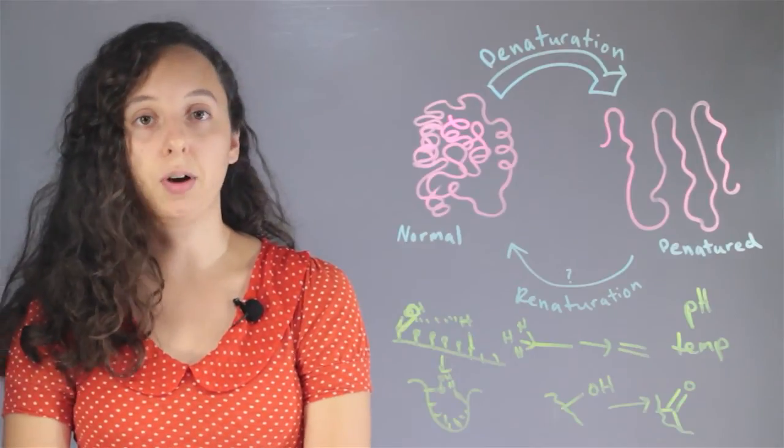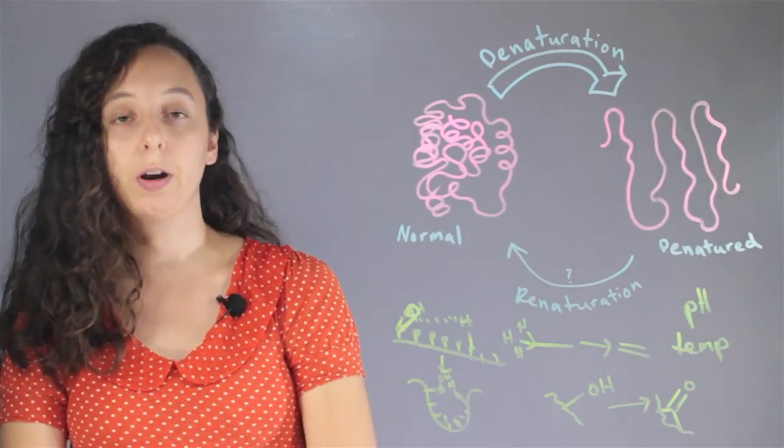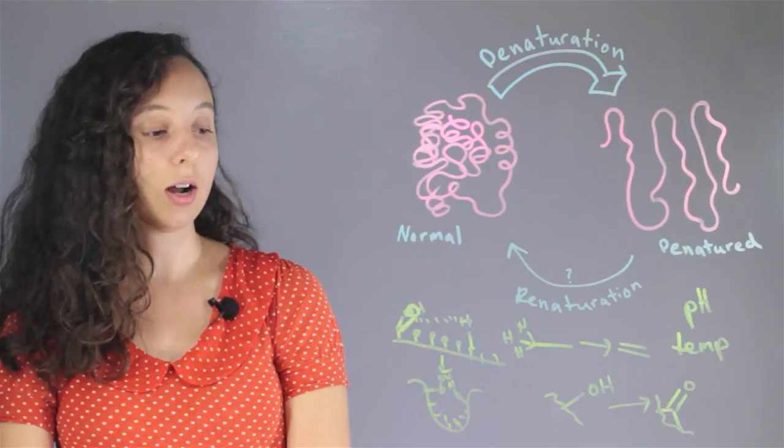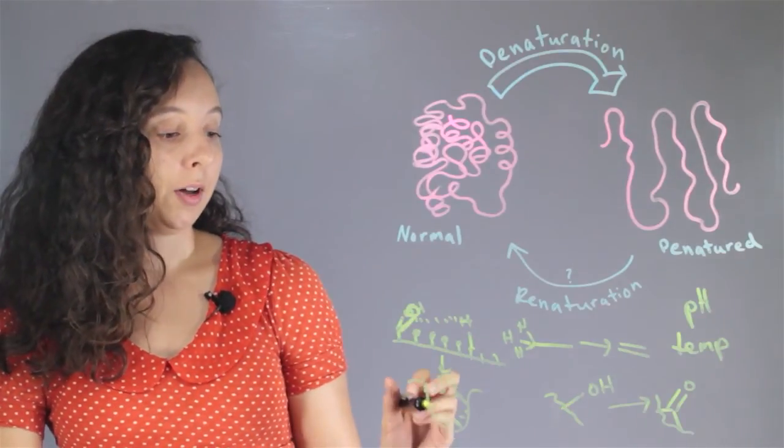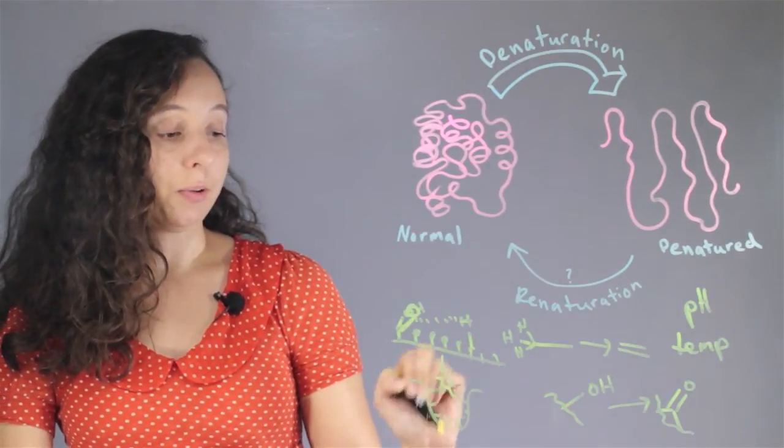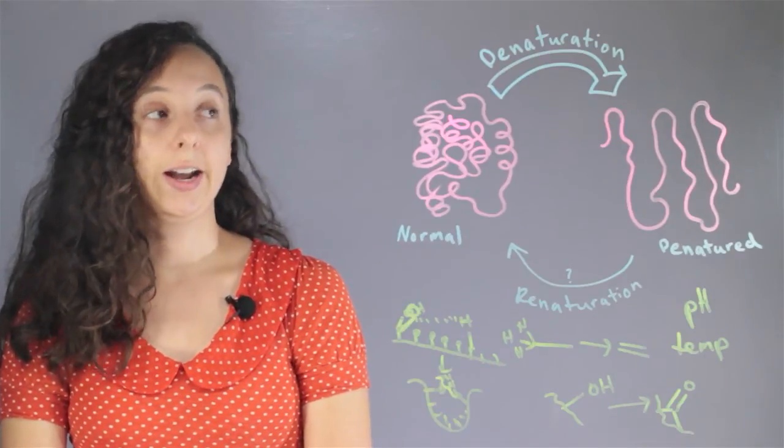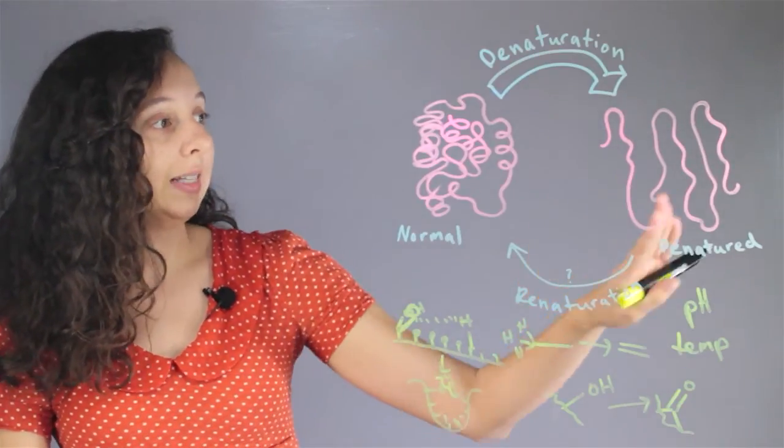Then maybe its hydrogen bond would change shape or not be as strong or be too strong. And then it would end up breaking the shape or changing it some way. If you do that over and over again, eventually you'll denature the enzyme.